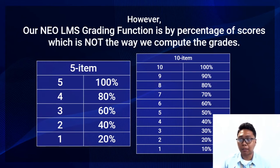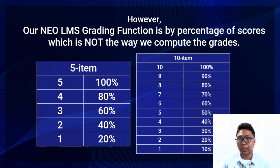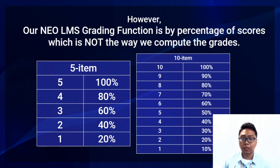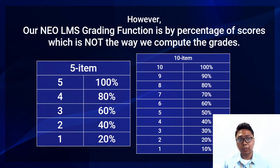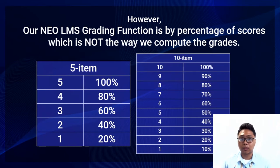For example, with 4 out of 5, instead of getting 92 as in the Senior High School Transmutation Table, you get 80. This is because NeoLMS calculates by percentage: 4 divided by 5 equals 0.8, multiplied by 100 gives 80%. That is not how we compute grades in the FCPC grading system.